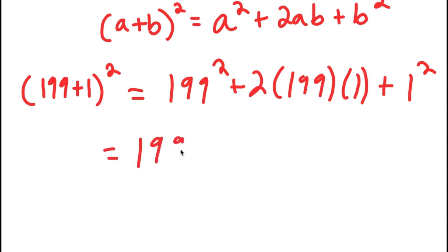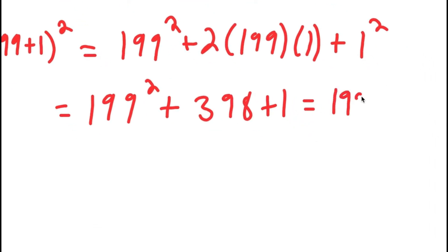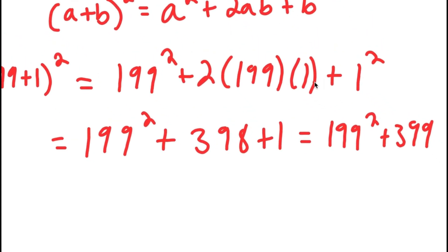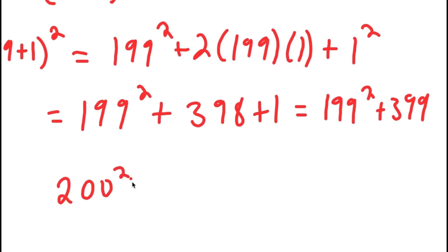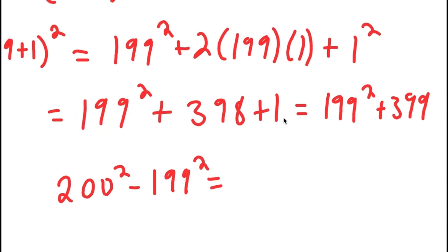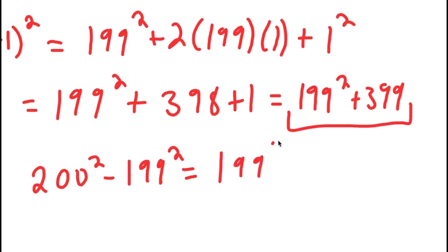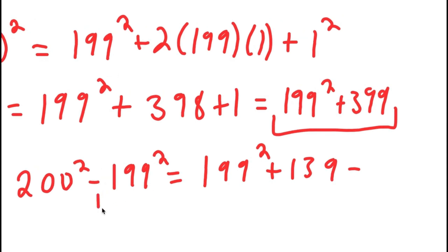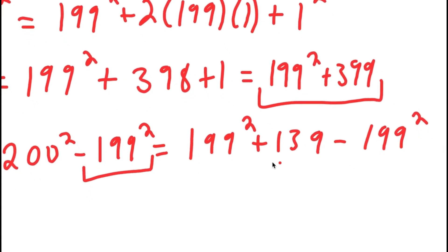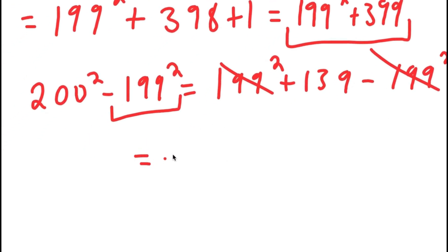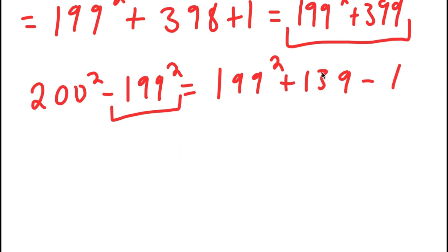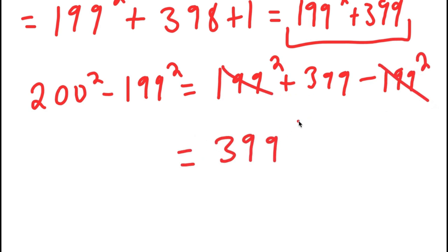And this is equal to 199 squared plus 398 plus one, which is equal to 199 squared plus 399. So this means that 200 squared minus 199 squared equals 199 squared plus 399, minus 199 squared. The 199 squared terms cancel out, and all I'm left with is 399. So that is my answer for method one.